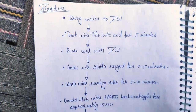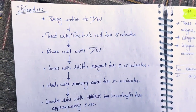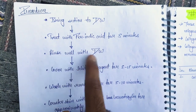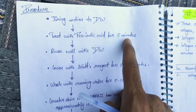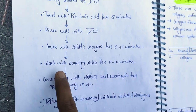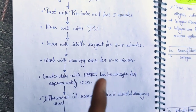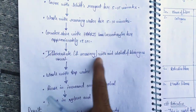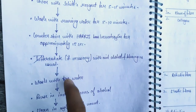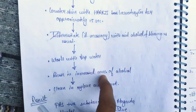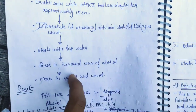The PAS procedure: first, bring the section to distilled water. Then treat it with periodic acid, then rinse with distilled water and cover with Schiff reagent. Then wash with running water, counter stain with hematoxylin for 15 seconds, then differentiate with acid alcohol.